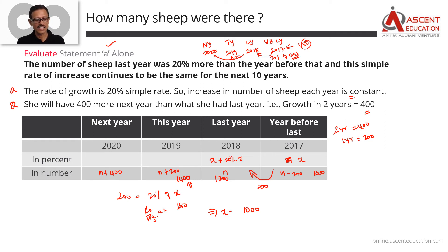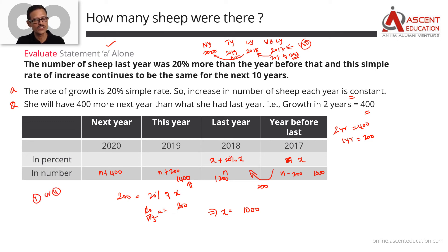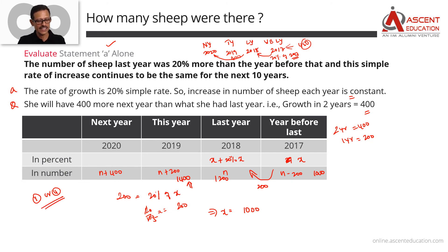We have a conclusive answer with Statement A alone — A alone is sufficient. So our answer options are narrowed down to 1 or 4. Answer option 1 says A alone is sufficient and B is not. Answer option 4 says each statement is independently sufficient. Both possibilities exist at this stage, so we quickly evaluate Statement B.